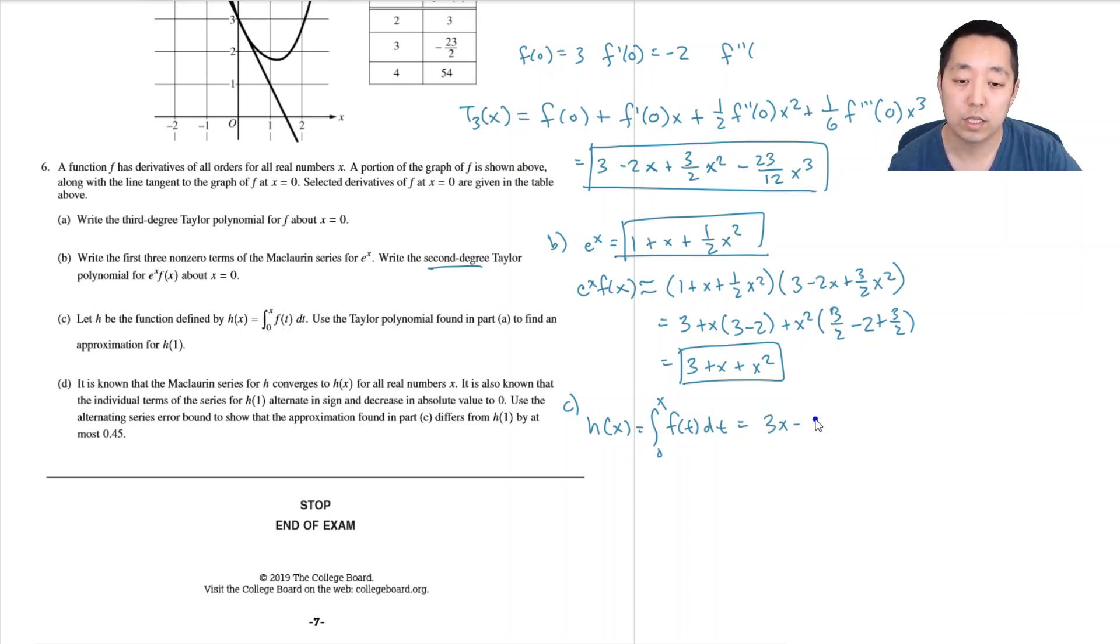If I'm going to integrate, just do antiderivative of this and evaluate from 0 to x, so it'd be 3x minus x squared plus one half x cubed minus 23 over 48 x to the fourth. So h(1) is approximately equal to 3 minus 1 plus one half minus 23 over 48. This is 2 plus one half is five halves minus 23 over 48. Times 24, 24 times 5 is 120. This is 97 over 48.